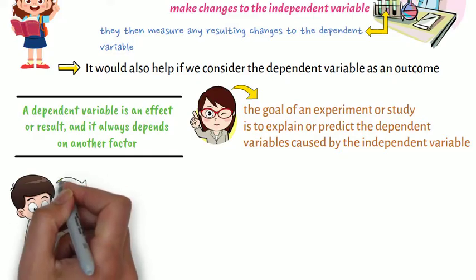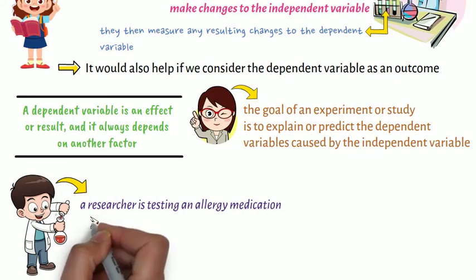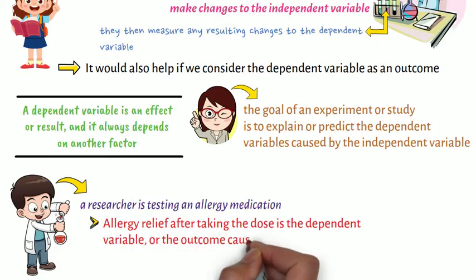Suppose a researcher is testing an allergy medication. Allergy relief after taking the dose is the dependent variable, or the outcome caused by taking the medicine.